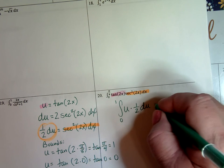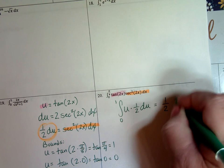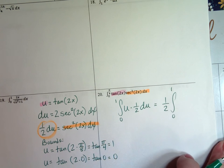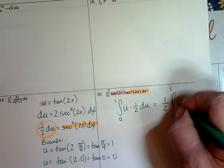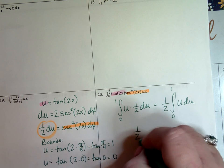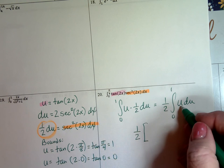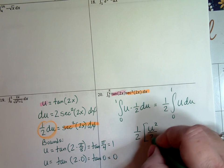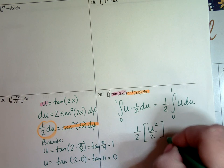What can I do with that ½? I can bring it out. It turns into a really easy problem at this point. I end up with a u du inside. ½. Add a power on. Divide by the power. u squared over 2. Going from 0 to 1.